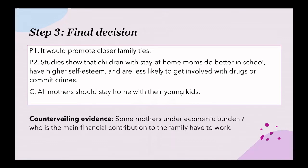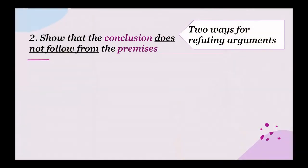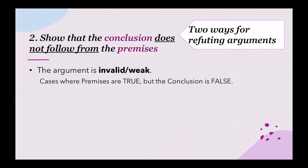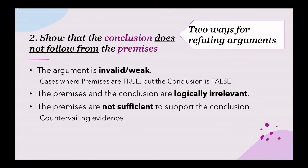When we provide countervailing evidence, we can draw a final conclusion: the argument is not convincing enough, and we have no good reason to believe the conclusion. So, what have we learned? We learned a second way for refuting arguments — we look at the relationship between the conclusion and the premises. To refute an argument, we need to show that the conclusion does not follow logically from the premises, find cases where premises are true but the conclusion is false, point out that the premises and conclusion are logically irrelevant, or provide countervailing evidence to show the premises are not sufficient to support the conclusion.